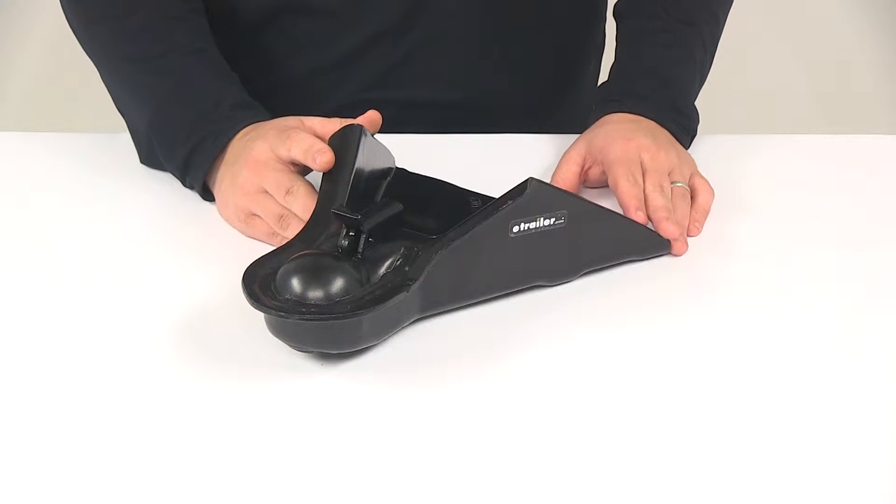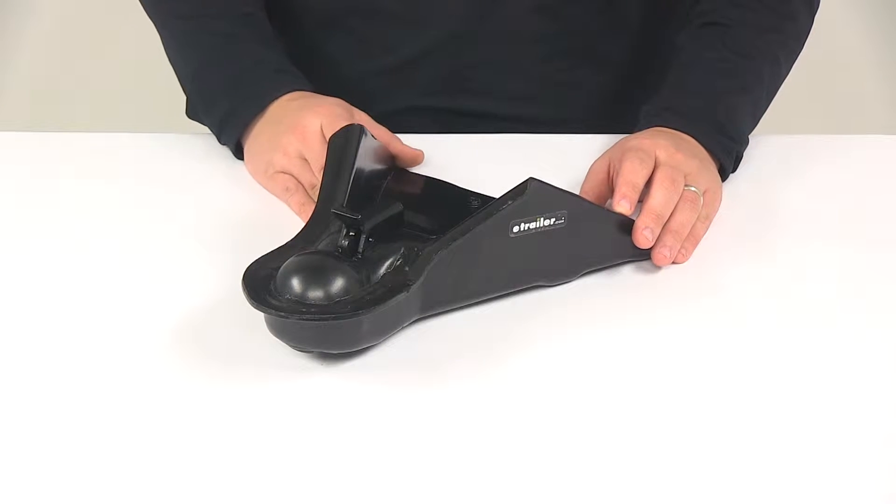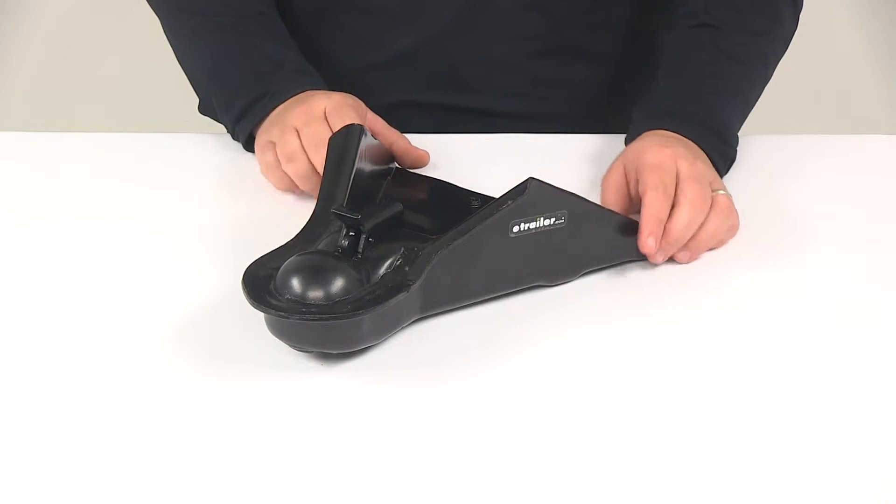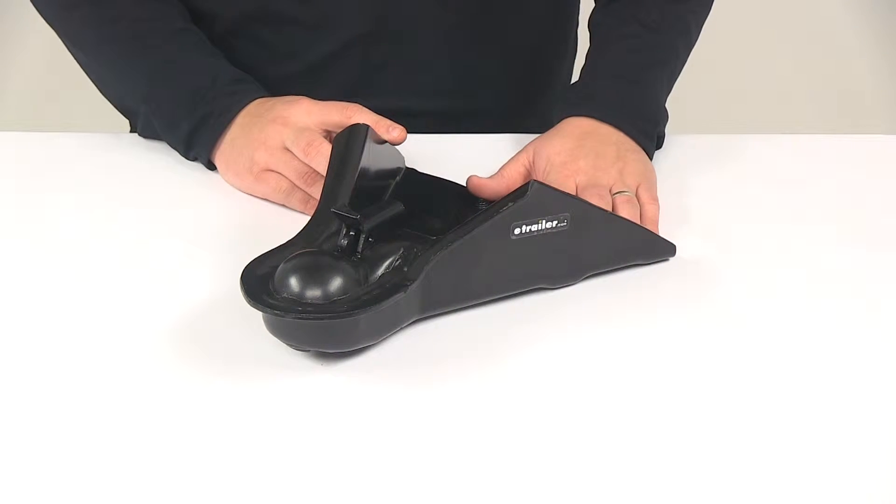The underslung coupler mounts to the bottom of your trailer's frame. This setup is great for trailers with taller frames because the additional frame height will be positioned above the coupler rather than close to the ground. It is a weld-on installation.